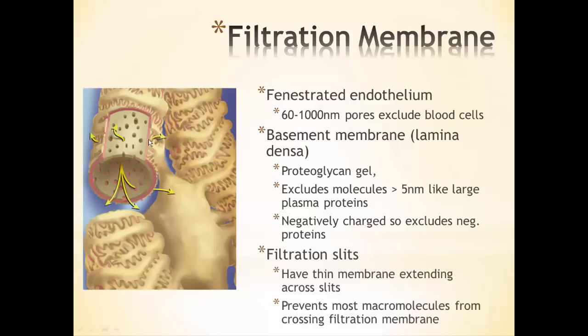The filtration slits are the next barrier to pass through. These slits have very thin membranes extending across them, preventing many macromolecules from crossing over the filtration membrane and getting into the Bowman's capsule. Basically, the idea is to keep blood cells, large plasma proteins, and large macromolecules inside the blood so they never become part of the filtrate. But most other things — all the ions, water, and smaller macromolecules like sugars — can get across that filtration membrane and become part of the filtrate.